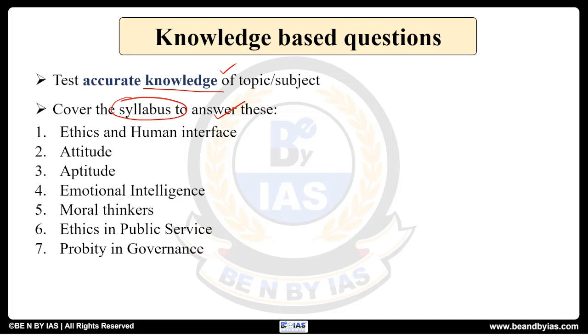It is given in your notification. Broadly we have seven sections in the theory. The first one is ethics and human interface where we introduce ourselves to ethics and we try to see various dimensions and determinants of ethics, plus some of the definitions with respect to what are values, what are principles, what are norms, what is ethics. All these basic information is learned here, different branches of it, dimensions of it.